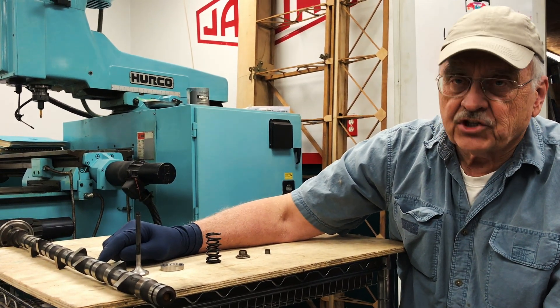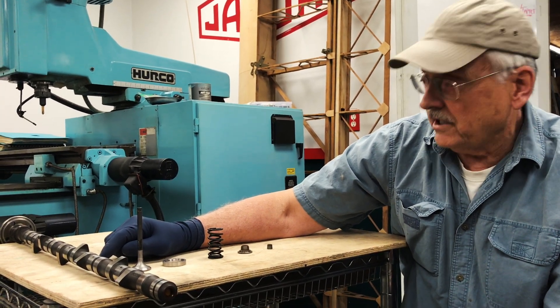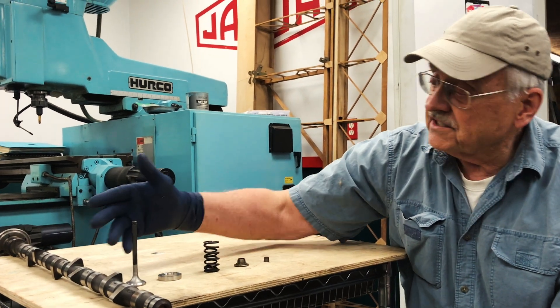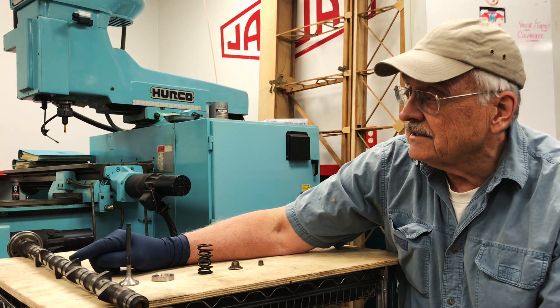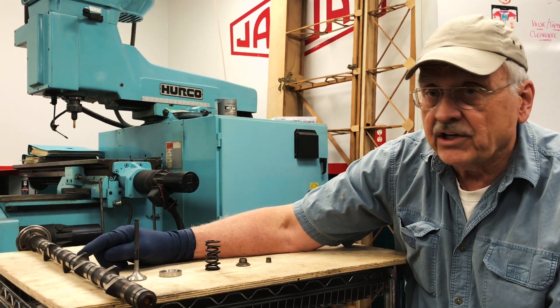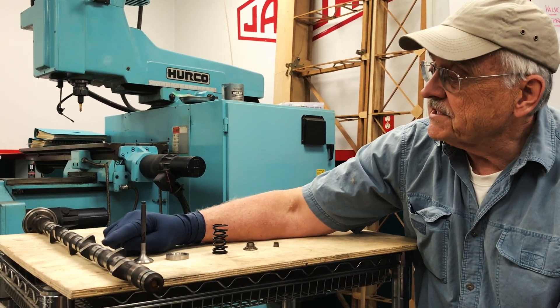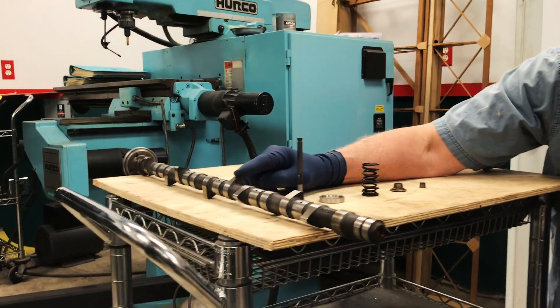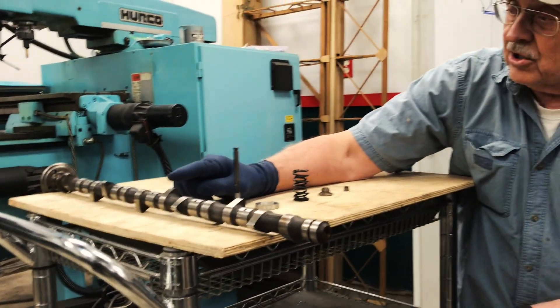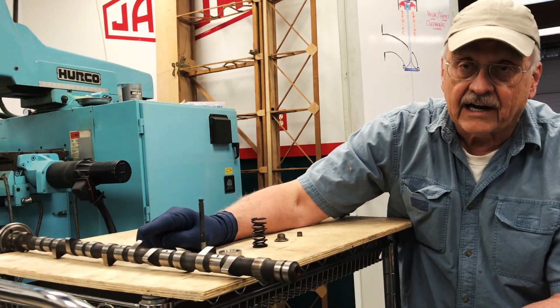Let's take some time and talk about the Jaguar V12 valve train. What you see here are the major components that enable the engine to breathe properly. This long skinny thing is called a camshaft, and these bumps are called cam lobes. These cam lobes have a very specific profile to them.